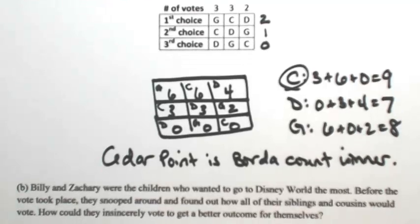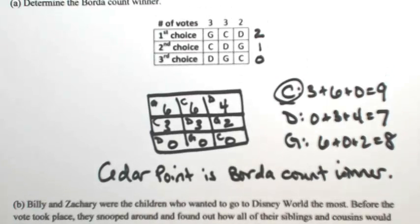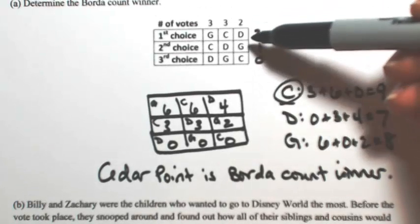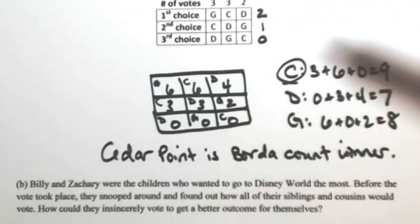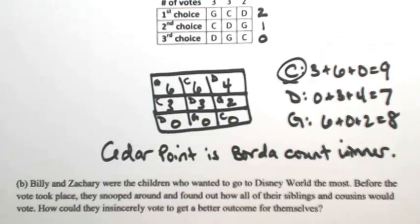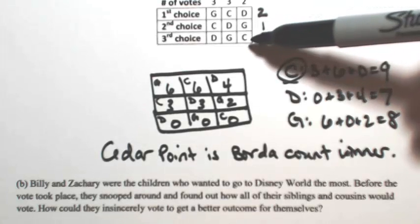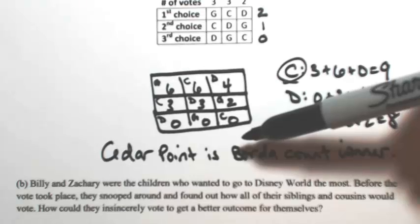As a follow-up, Billy and Zachary were the children who wanted to go to Disney World the most — looking at our table, the last two voters preferred Disney World the most. Before the vote took place, they snooped around and found out how all of their siblings and cousins would vote. They preferred Cedar Point the least, and Cedar Point is the one that won.